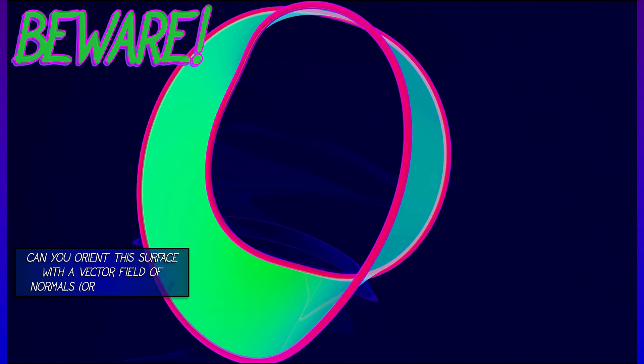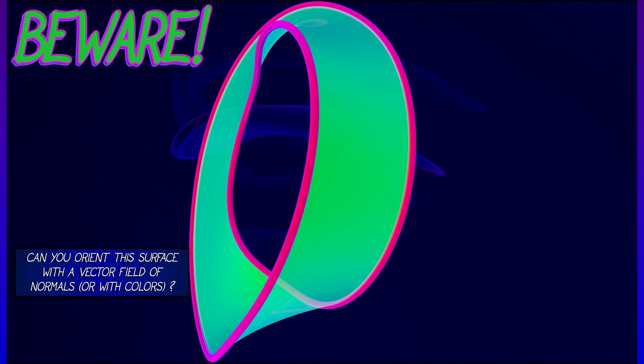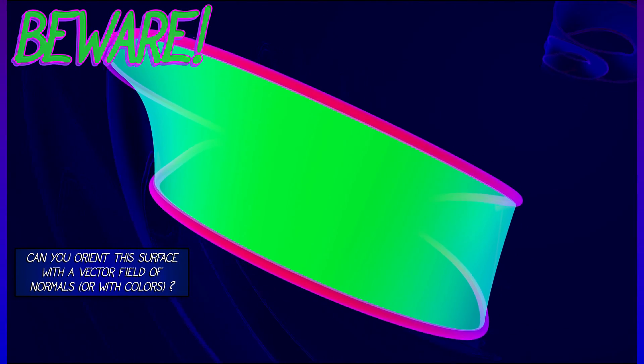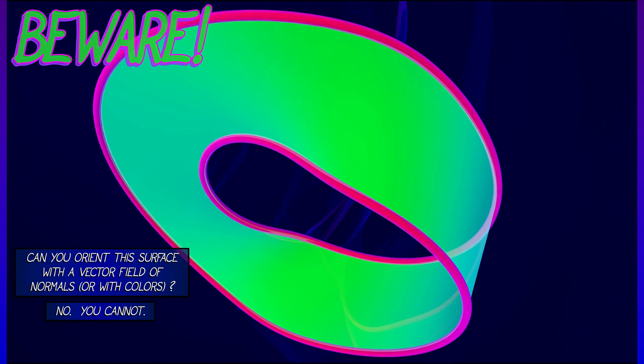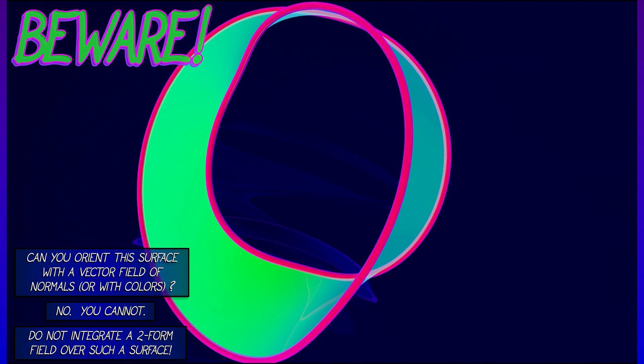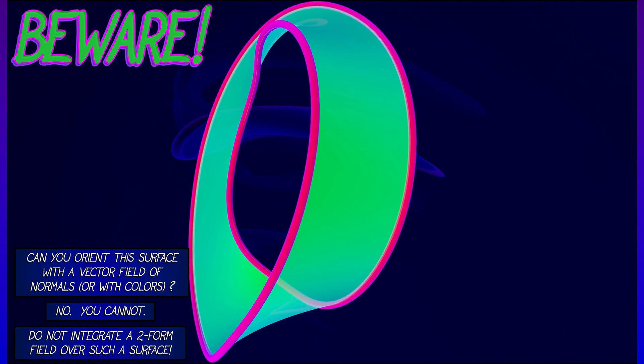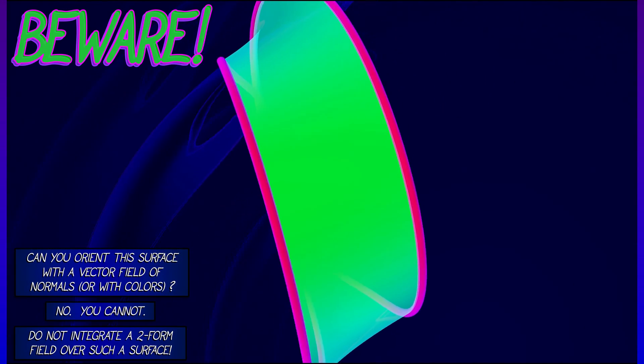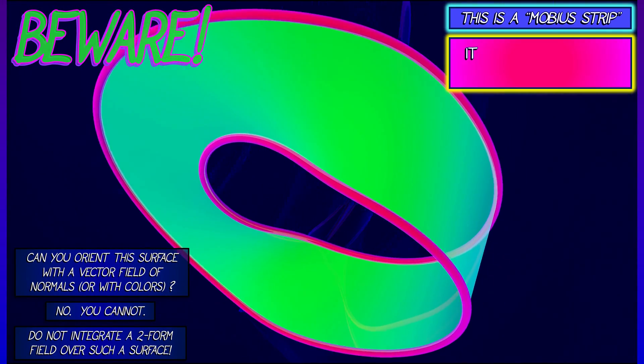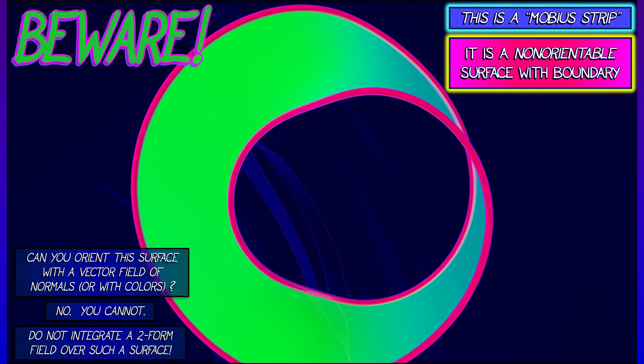Consider the following surface. What happens when you try to orient the surface with a field of normals or with colors, painting each side a different color? You are going to be frustrated because you cannot orient the surface. This is a non-orientable surface. This is a Mobius strip or Merbius strip as it is sometimes pronounced. It is a non-orientable surface with boundary.